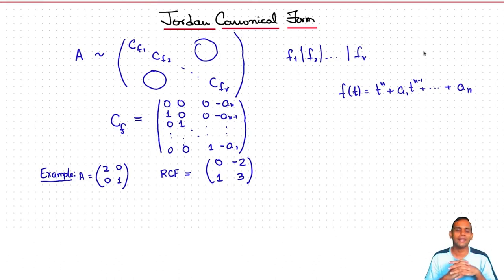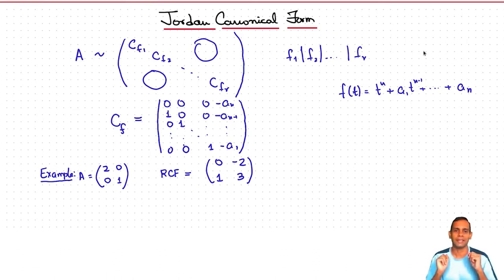To obtain the Jordan canonical form, you first find the primary decomposition of your module — the module corresponding to your matrix — and then after that you apply the rational canonical form to each part. However, not quite the rational canonical form; the basis we use will be slightly different, as you shall see.